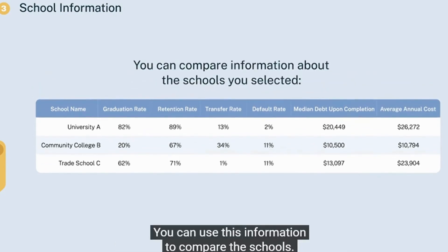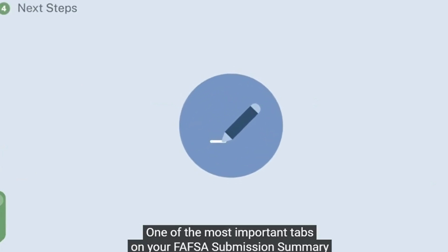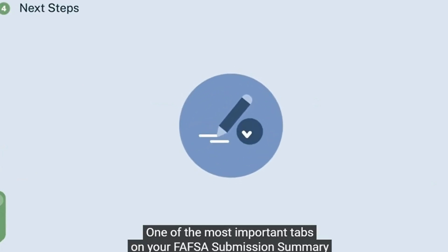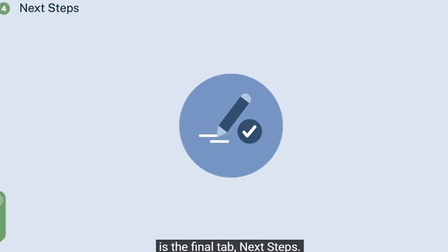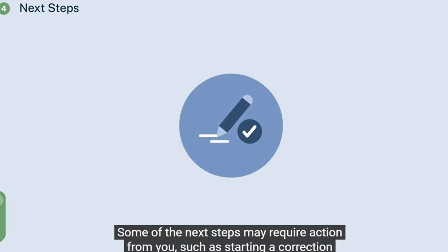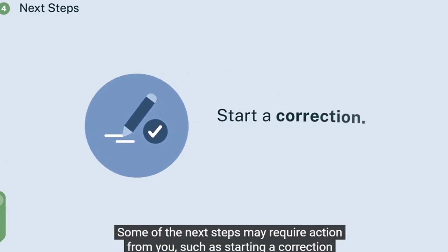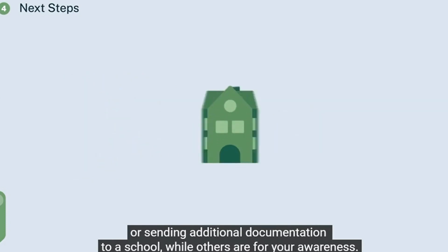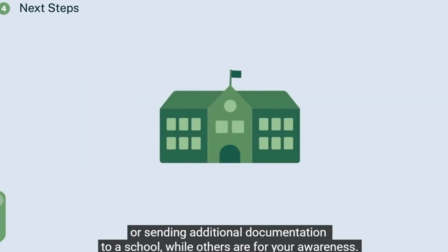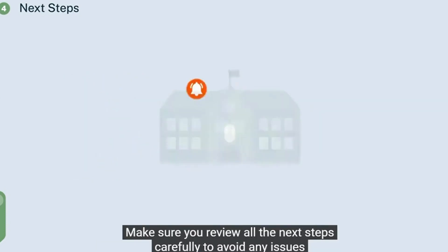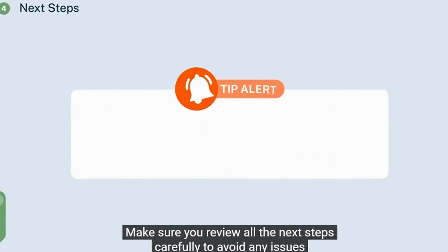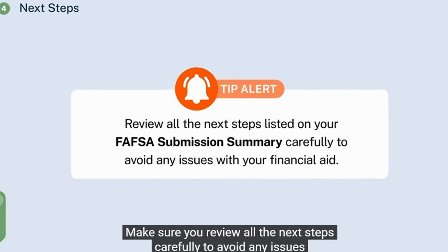One of the most important tabs on your FAFSA submission summary is the final tab, Next Steps. Some of the next steps may require action from you, such as starting a correction or sending additional documentation to a school, while others are for your awareness. Make sure you review all the next steps carefully to avoid any issues with your financial aid.